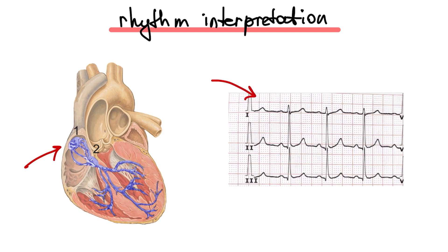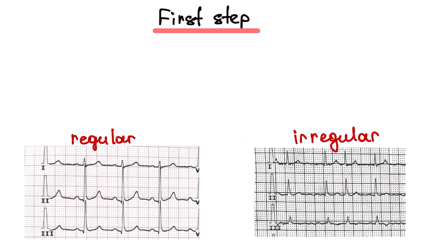These features can help you interpret the rhythm correctly. First step: look at whether the rhythm is regular or irregular.